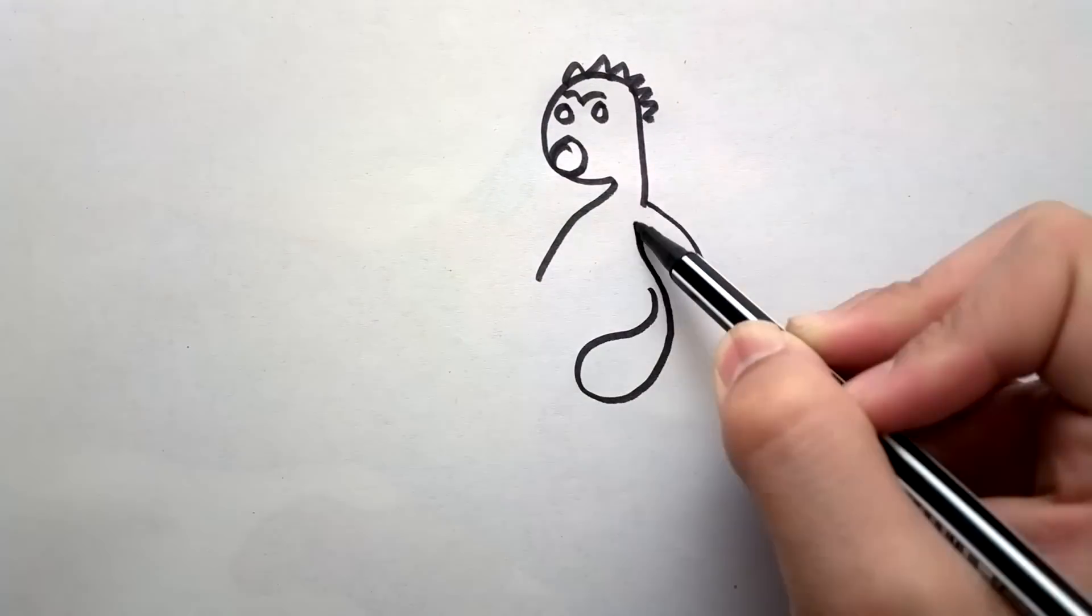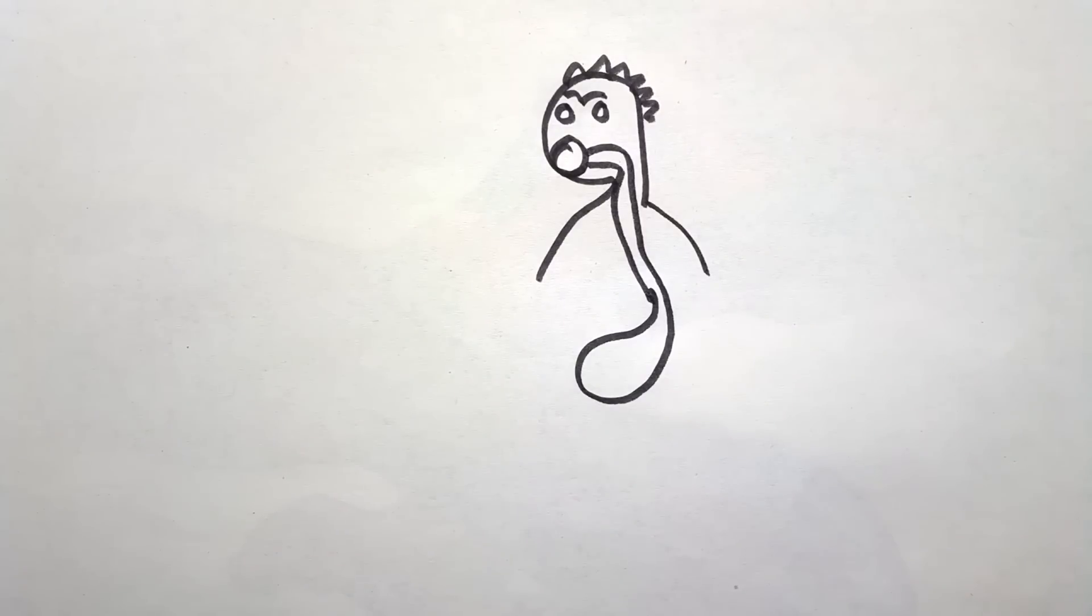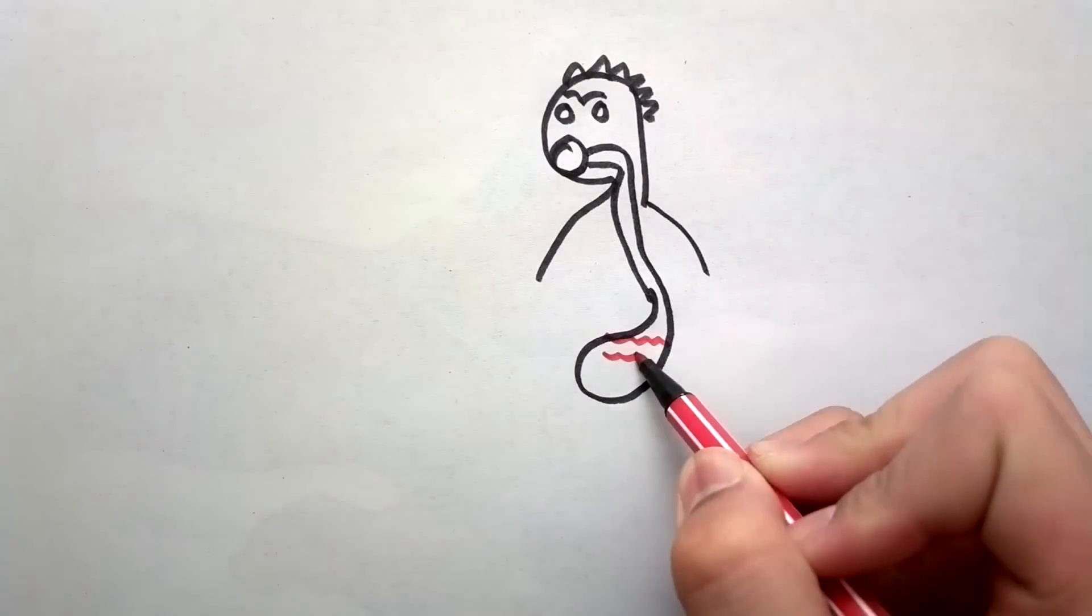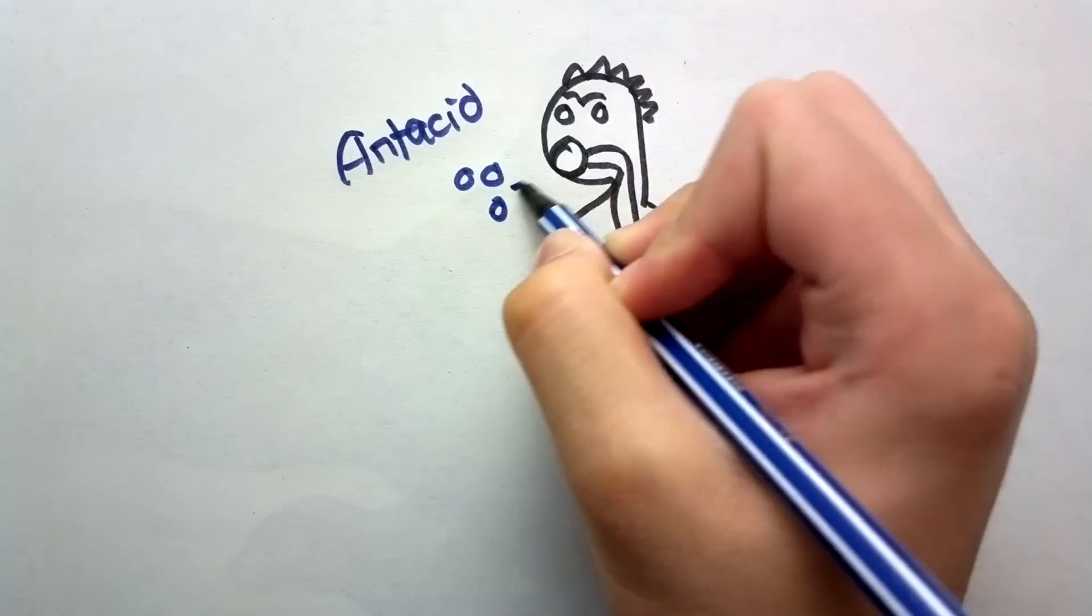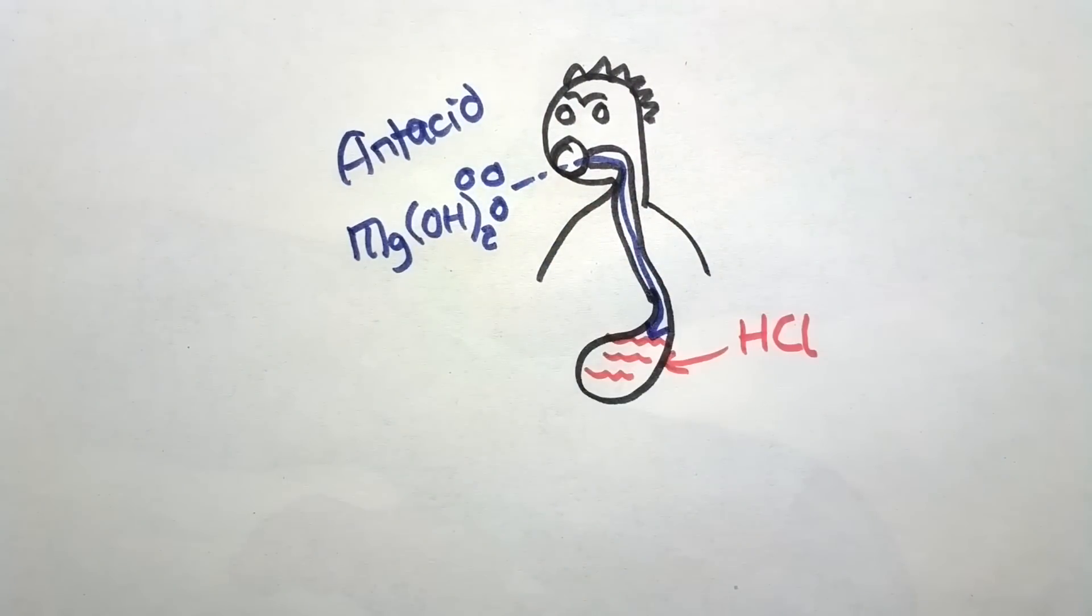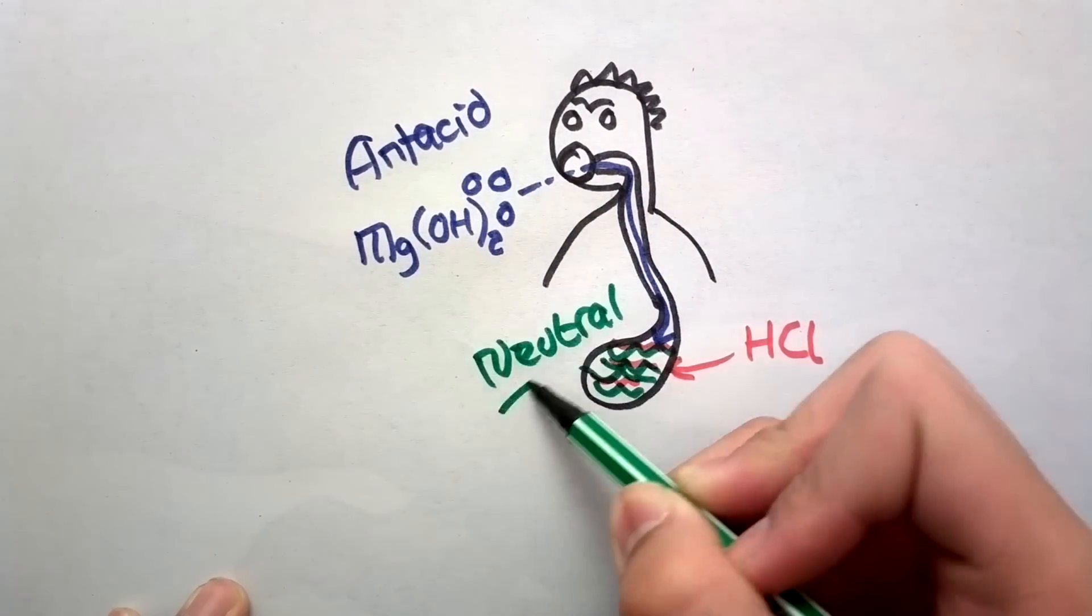When someone suffers from a heartburn, some antacids are given to eat, so that neutralization can take place in the stomach of the patient. Stomach has hydrochloric acid in it, whereas a popular antacid is milk of magnesia, which contains MgOH2.